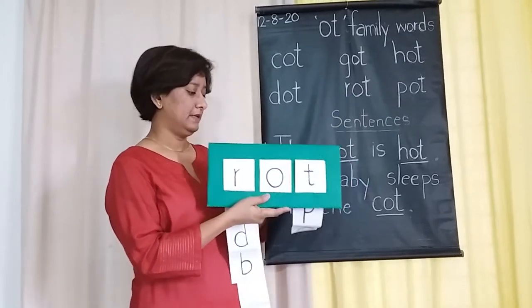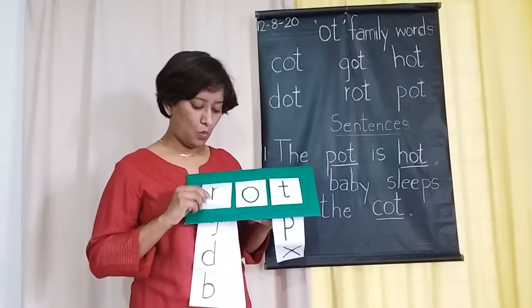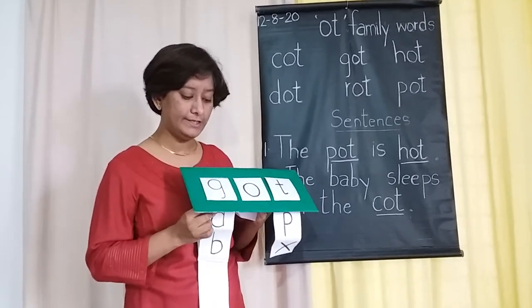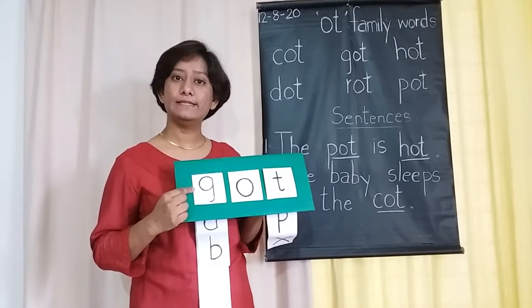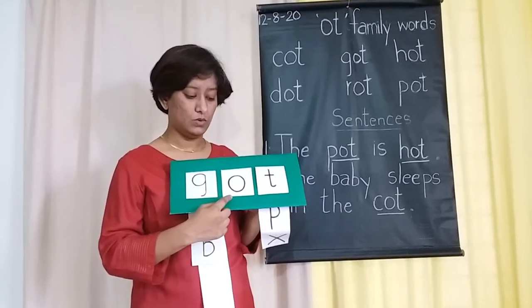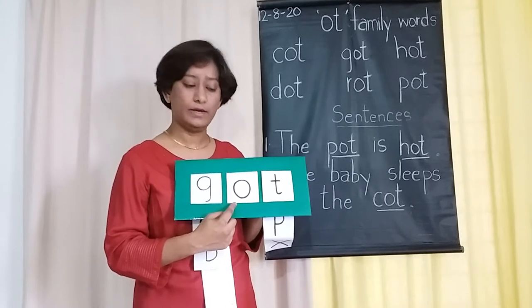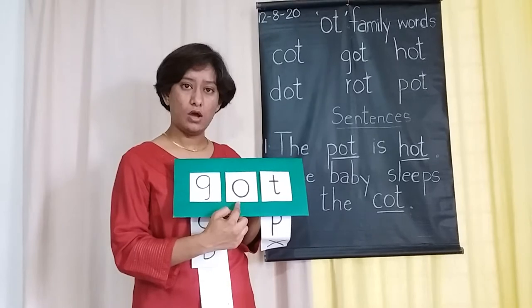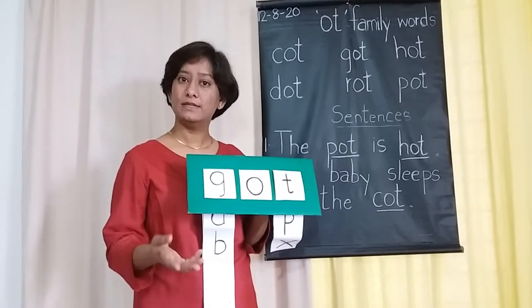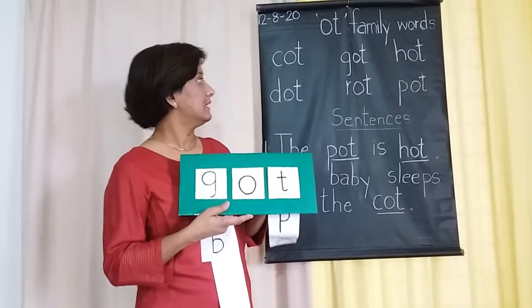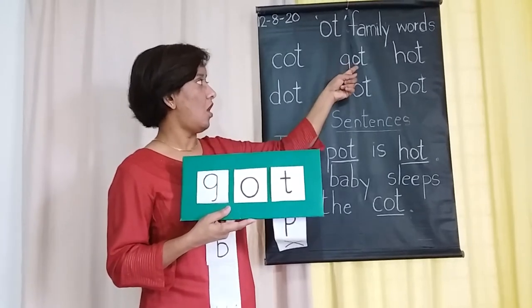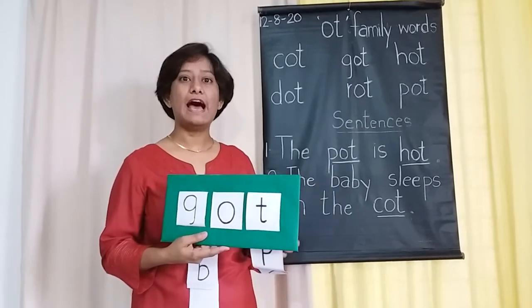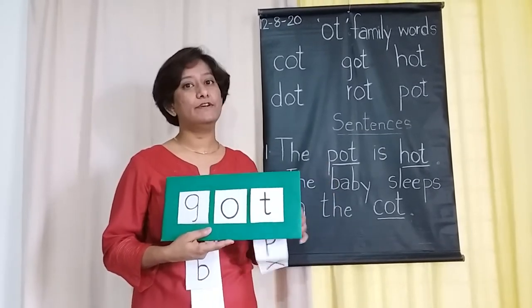Let's make one more word. This time I am going to add G. G says G. O says O. T says T. G, O, T — Got. Got means something which I have. For example: I have got a new dress, I have a doll, or I have a toy with me.